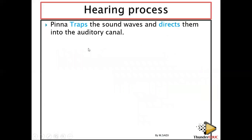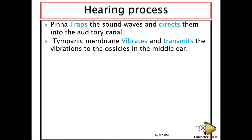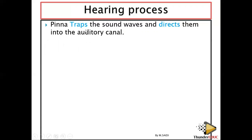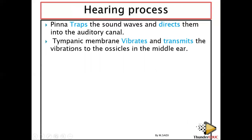Let's look at the key steps. Number one: the pinna traps the sound waves and directs them to the auditory canal. The major key points here are 'traps and directs.' The pinna traps and directs sound waves into the auditory canal, causing the tympanic membrane to vibrate.